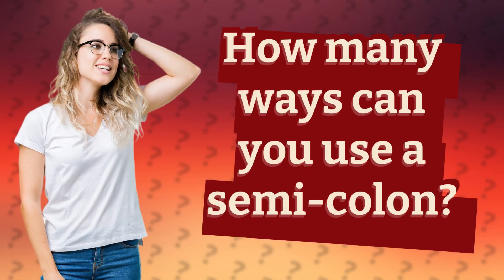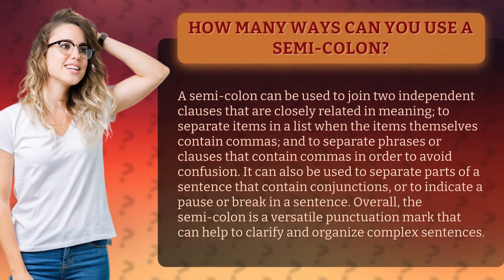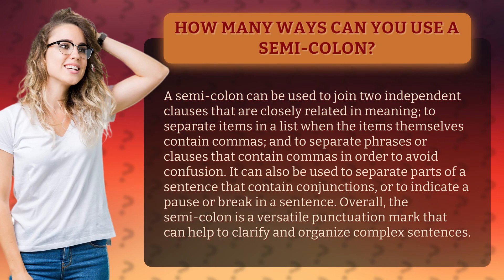How many ways can you use a semicolon? A semicolon can be used to join two independent clauses that are closely related in meaning, to separate items in a list when the items themselves contain commas, and to separate phrases or clauses that contain commas in order to avoid confusion.